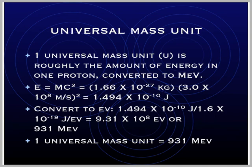So we finally have our constant. One universal mass unit is equal to 931 mega electron volts. And what this means is the amount of energy stored in a proton is 931 times 10 to the sixth electron volts.